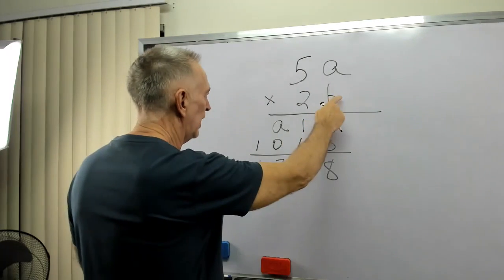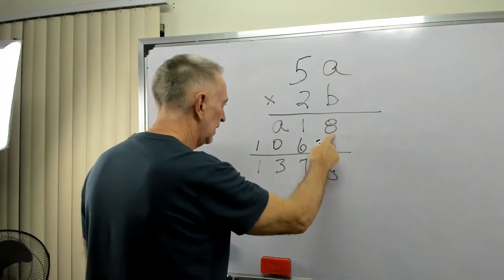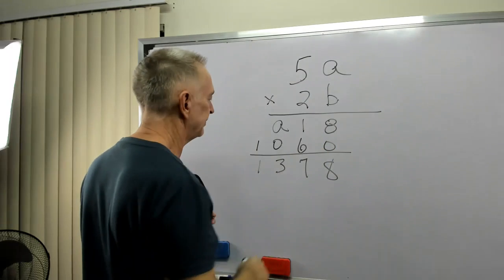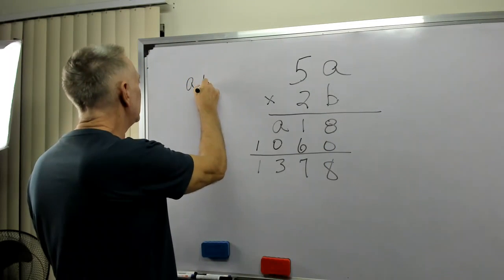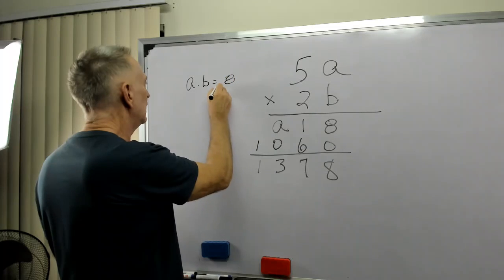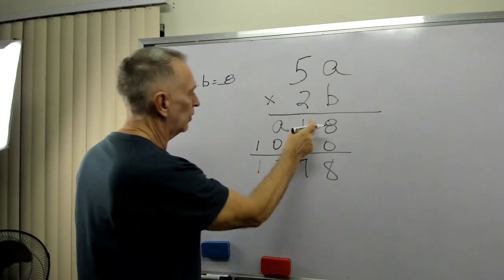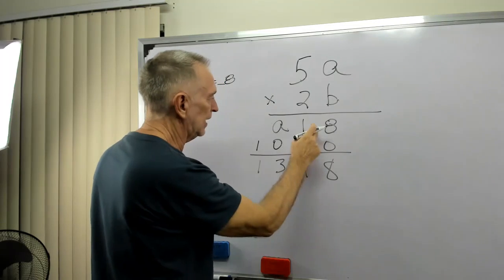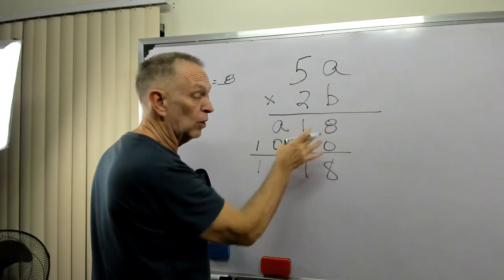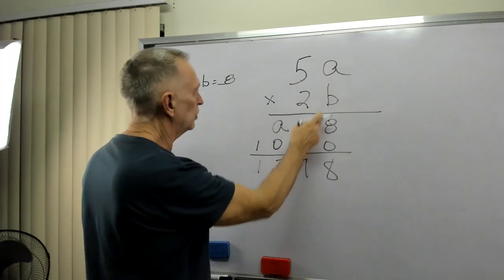Okay, what do we have? A times B equals 8. Hmm, A times B equals 8. Now, we don't know if that's two digits, you know, if that's 18, 28, 38, we don't know. Because there could be a carry.